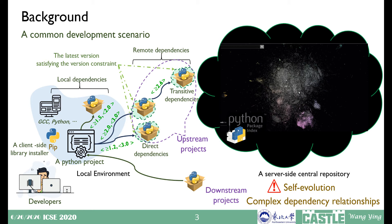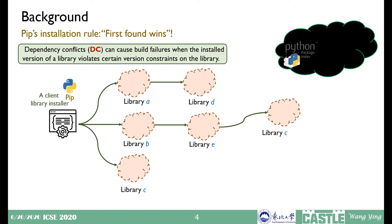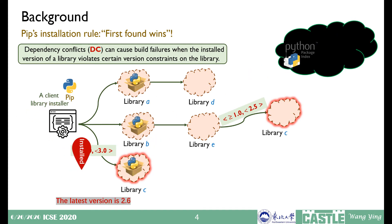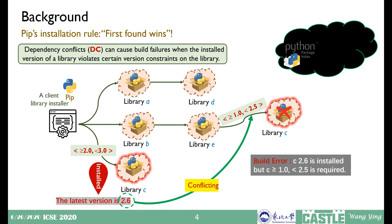Among the complex dependency relationships in the PyPI ecosystem, such automatic building comes with the risk of potential dependency conflict issues. In the Python world, if the same library with different version constraints are introduced in a project, according to PIP's installation rule, only the first found library can be installed — PIP adopts a depth-first traversal strategy. So if the installed version of a library violates its other version constraint on the same dependency, a build error will happen.